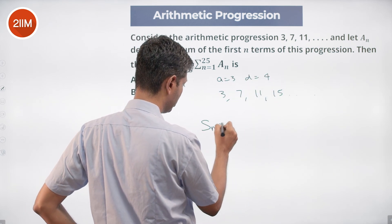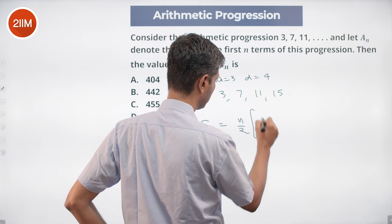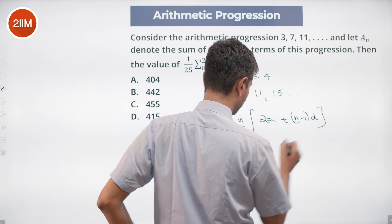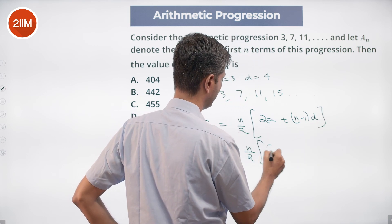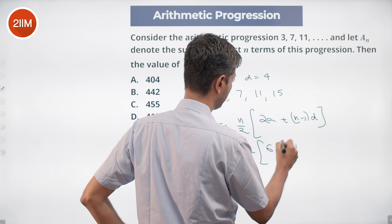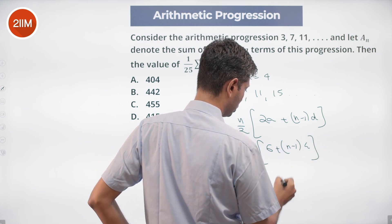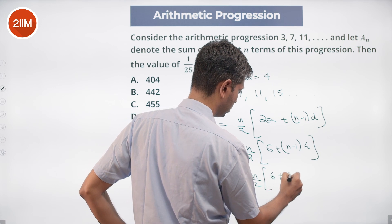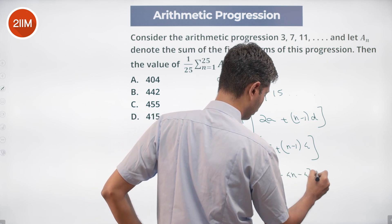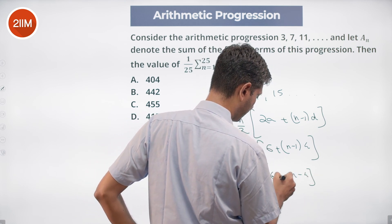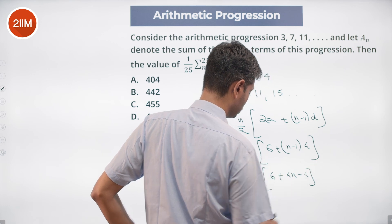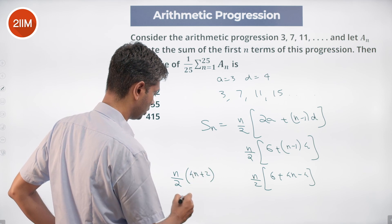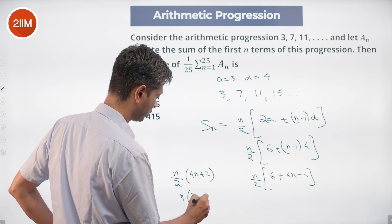Sum up to n terms is n/2 times 2a plus (n-1) into d. This is n/2 times 2 into 3 is 6 plus (n-1) times 4. This is 4n minus 4, n/2 times 6 plus 4n minus 4. This becomes 4n plus 2, n/2 times 4n plus 2 or n times 2n plus 1.